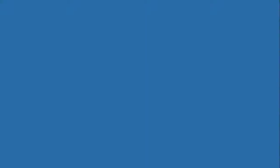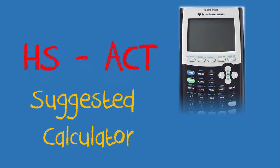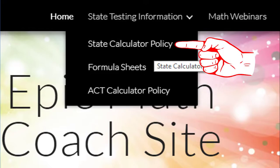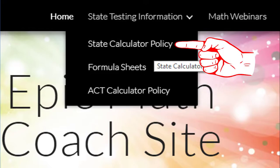Now let's look at what has changed. The high school will now be taking the ACT in 11th grade for their state test and will be allowed a graphing calculator. The suggested graphing calculator for the ACT is the TI-84 Plus and looks like this. The link to this calculator and all calculators in this MathCast can be found on our MathCoach site under State Testing Information, State Calculator Policy.